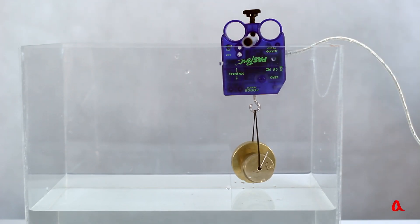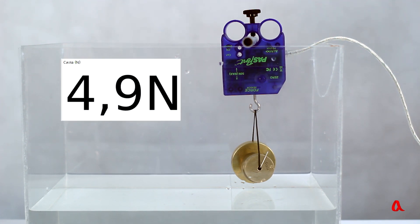Now we will find the density of brass loads with the help of Archimedes principle, without measuring their volume. The loads are suspended onto the force sensor, which shows their weight, 4.9N.